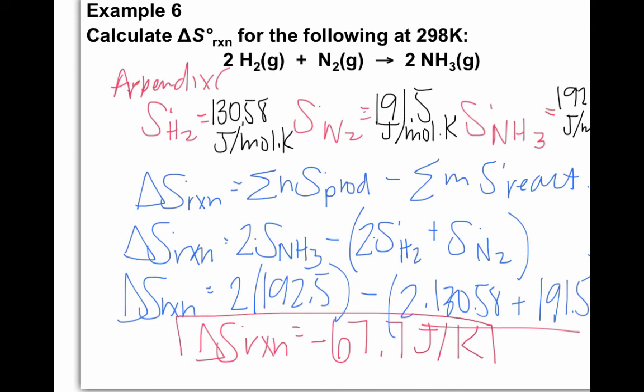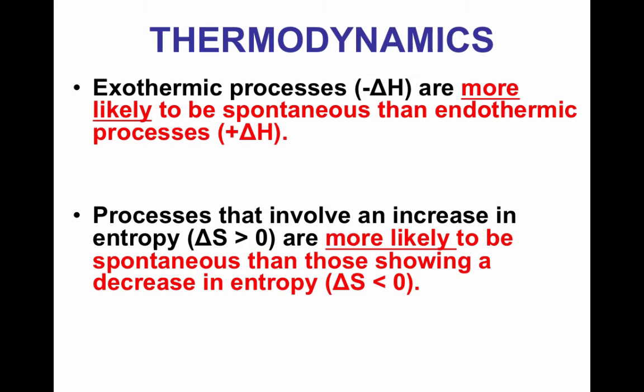Again, remember moles cancel because of using the coefficients. So we get negative 67.7 joules per kelvin, which tells us your entropy is decreasing, which means you're becoming more ordered.